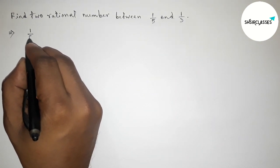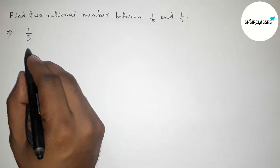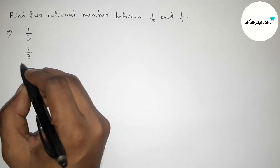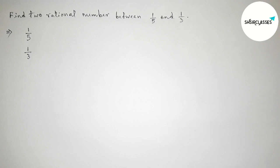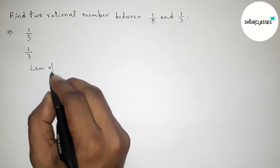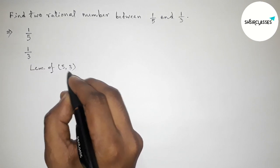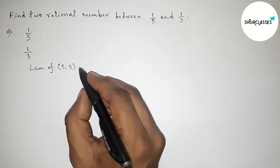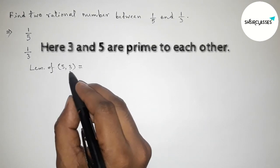Here given two rational numbers 1 by 5 and 1 by 3. The denominators of the two numbers are not equal, so first we have to make equal denominators.